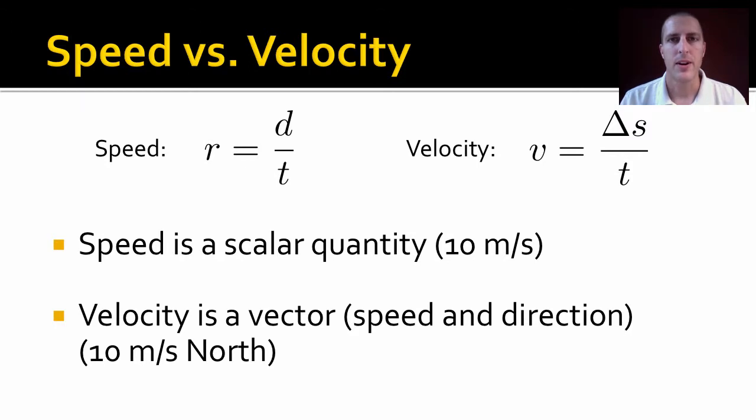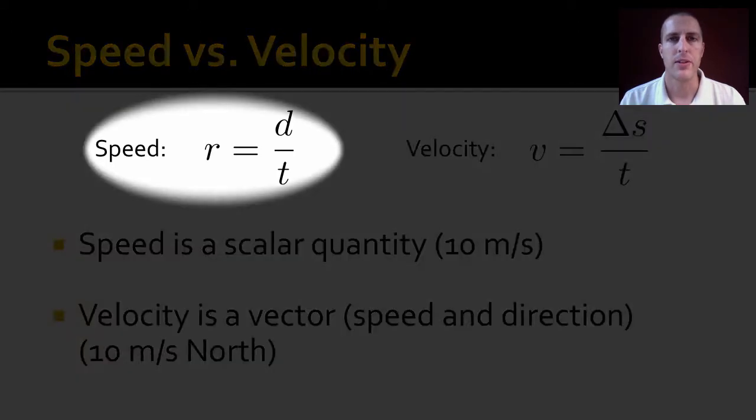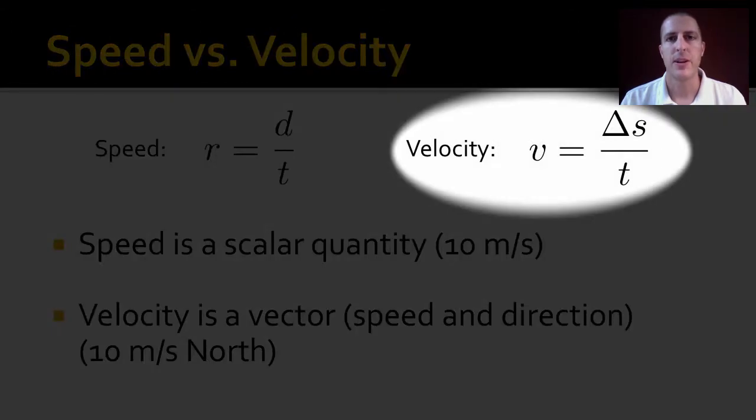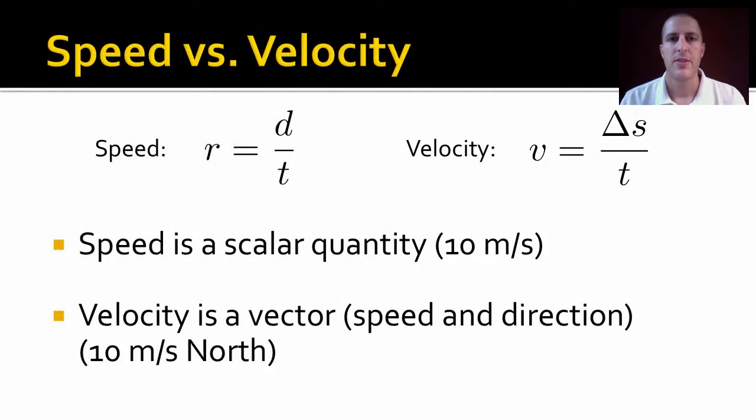Now, two more quantities, speed and velocity. They're similar, but a little bit different. Speed, we write as a lowercase r for rate, and that's just distance over time. Velocity is displacement over time. Speed is going to be a scalar quantity, because distance is a scalar quantity. So, we measure that in meters per second. Whereas velocity is a vector. It has both speed and direction. And so that, we're going to have to say things like 10 meters per second north. We have to include a direction there.